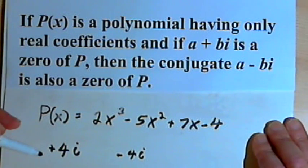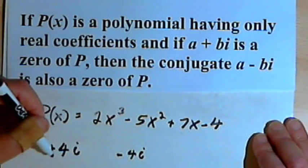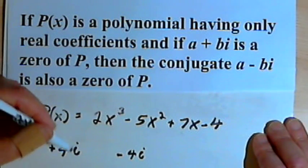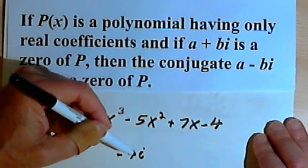Basically all this is saying is that if you have imaginary zeros, they're going to occur in pairs. You're going to have something with a plus, maybe some number and an i, and a minus, and then that same number and an i.